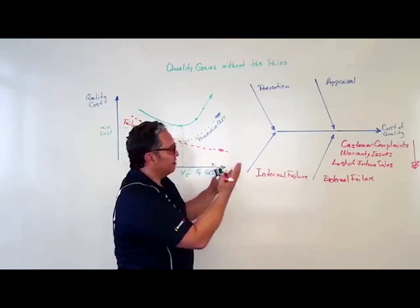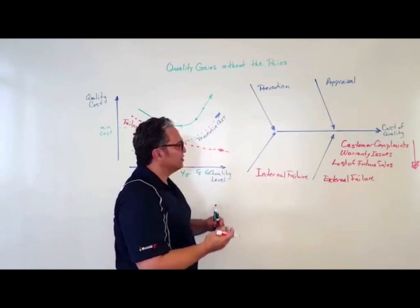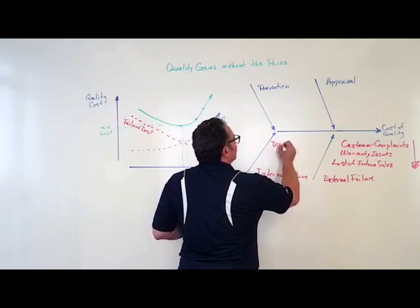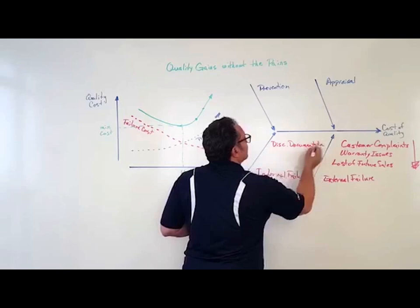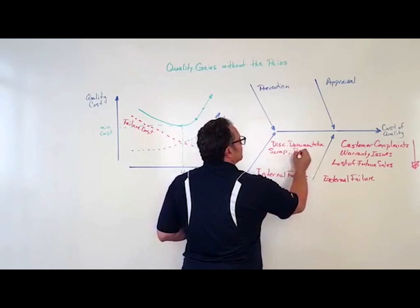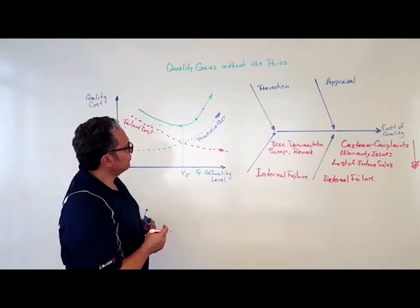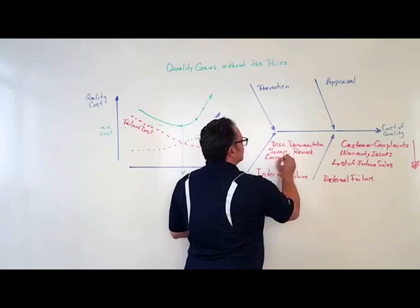The next thing that we could do is catch problems inside, and if we catch them inside we still have the discrepancy documentation that we have to do. We might have to scrap, we might have to rework, all that labor of rework. We might have to do some corrective action.